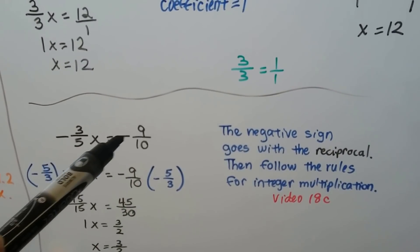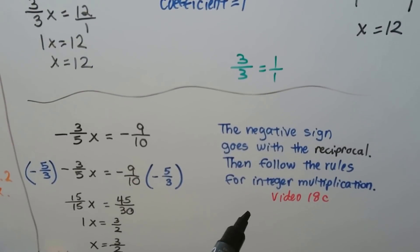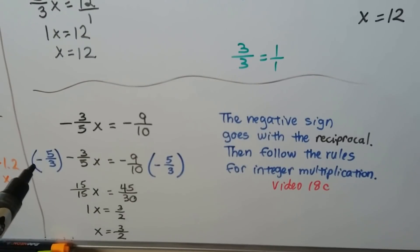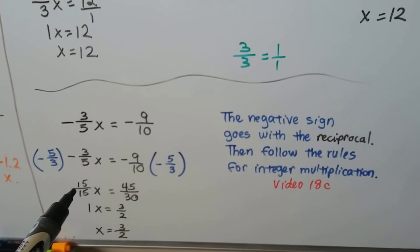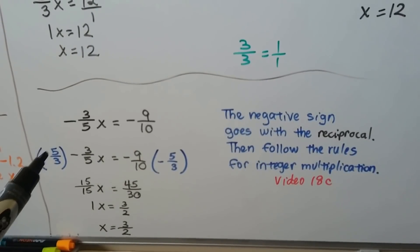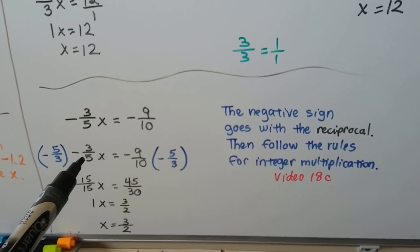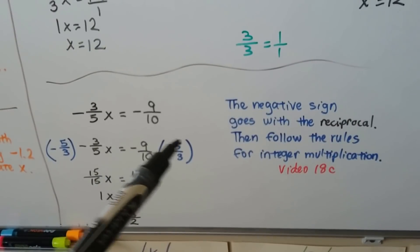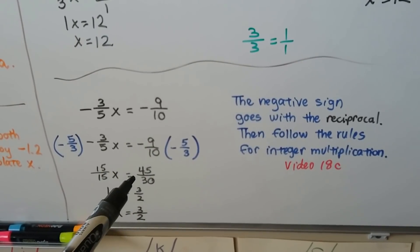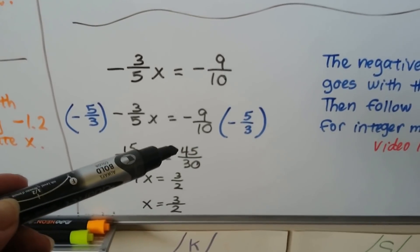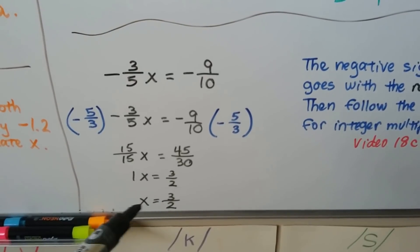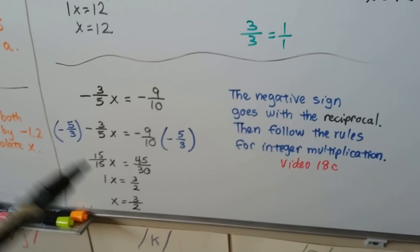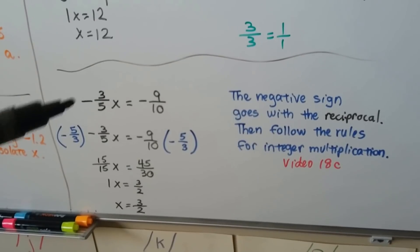We have negative 3 fifths x equals negative 9 tenths. The negative sign goes with the reciprocal — so the reciprocal of negative 3 fifths is negative 5 thirds. We multiply both sides by negative 5 thirds. A negative times a negative gives a positive, so negative 5 times negative 3 gives positive 15, and negative 3 times negative 5 gives positive 15 — we get a positive 1, so we have x. On this side, 9 times 5 is 45 and 10 times 3 is 30, giving positive 45 over 30, which simplifies to 3 halves. So x equals 3 halves.